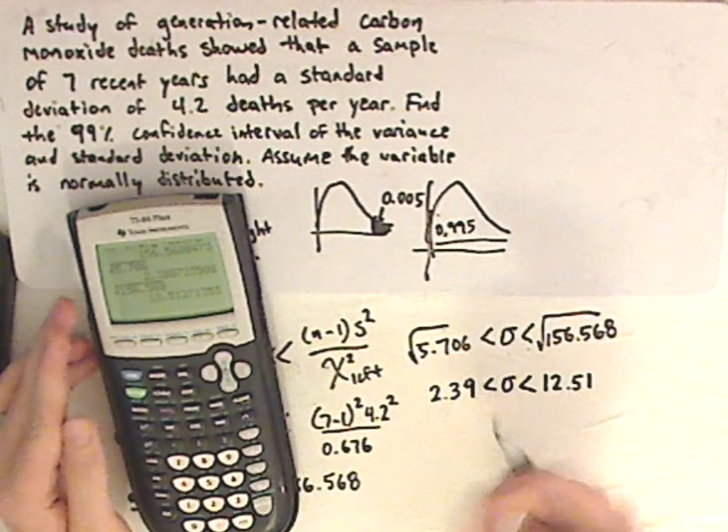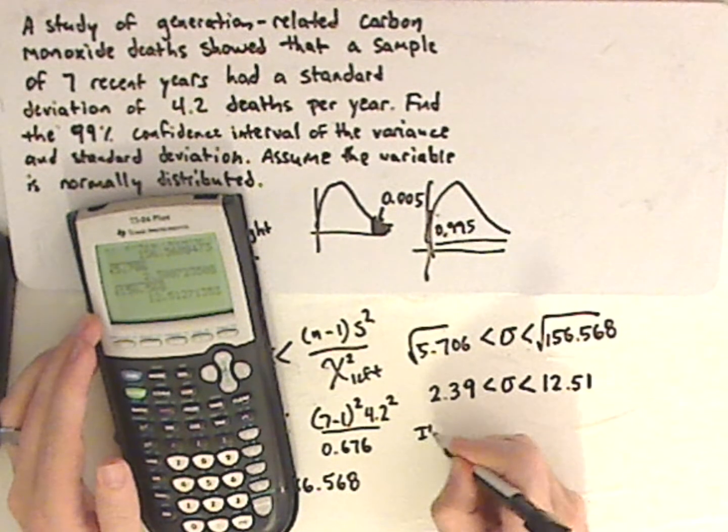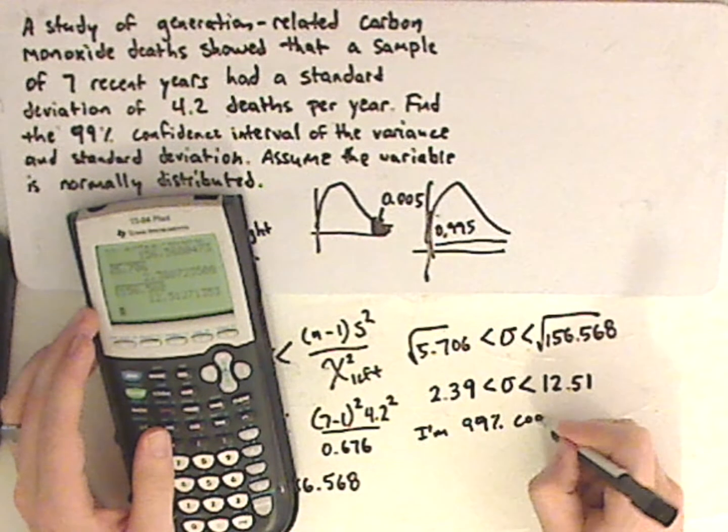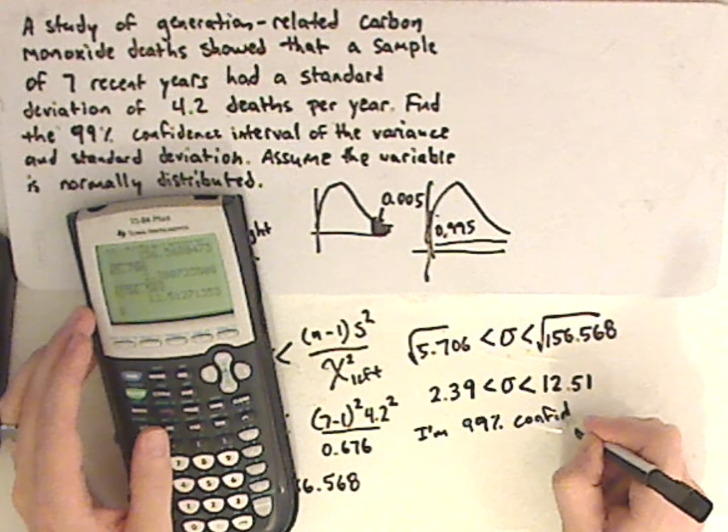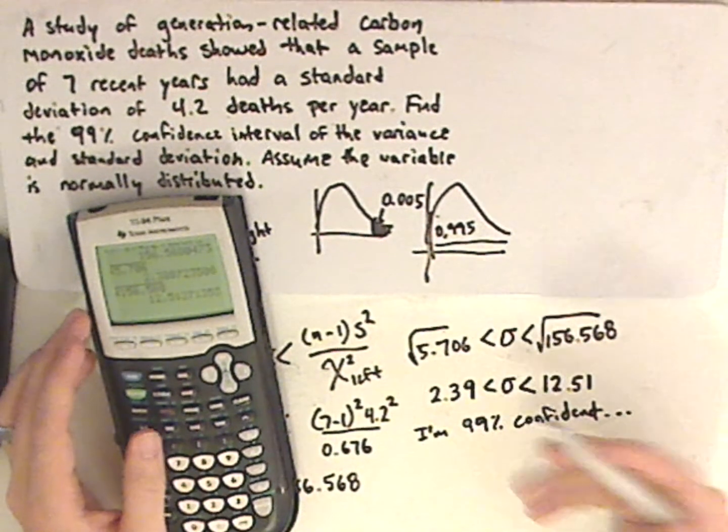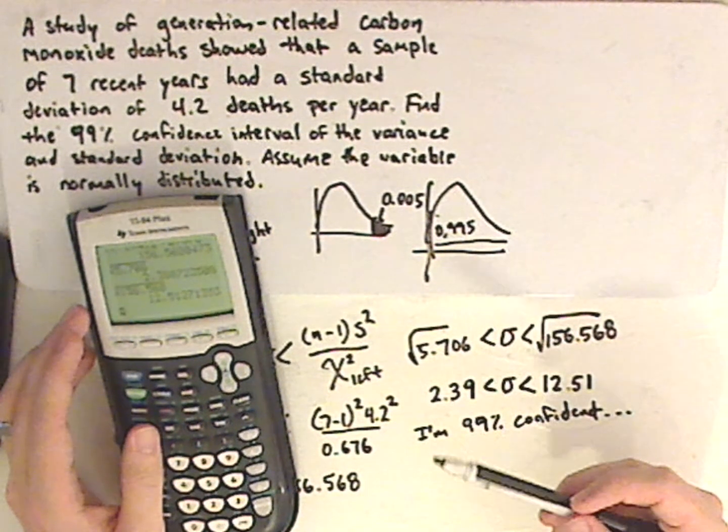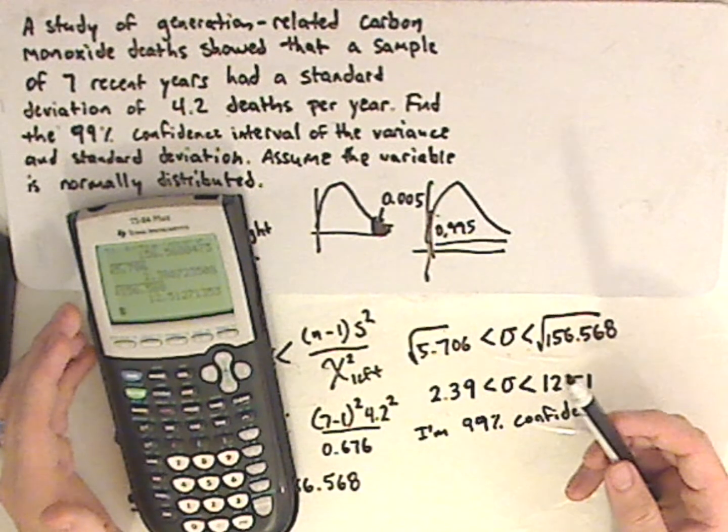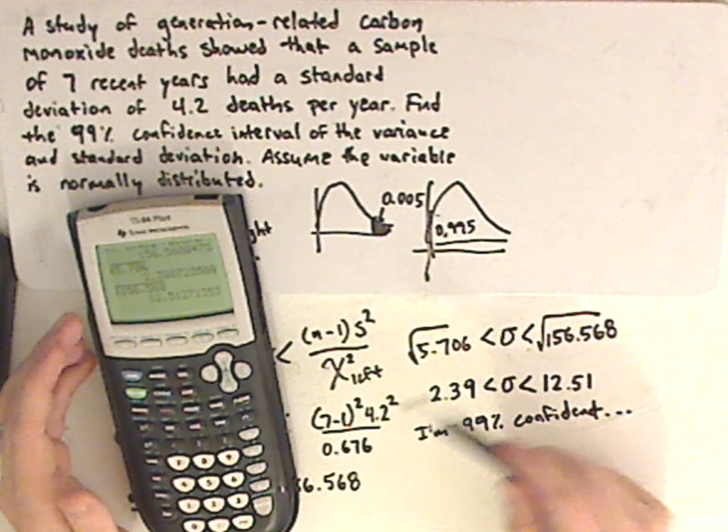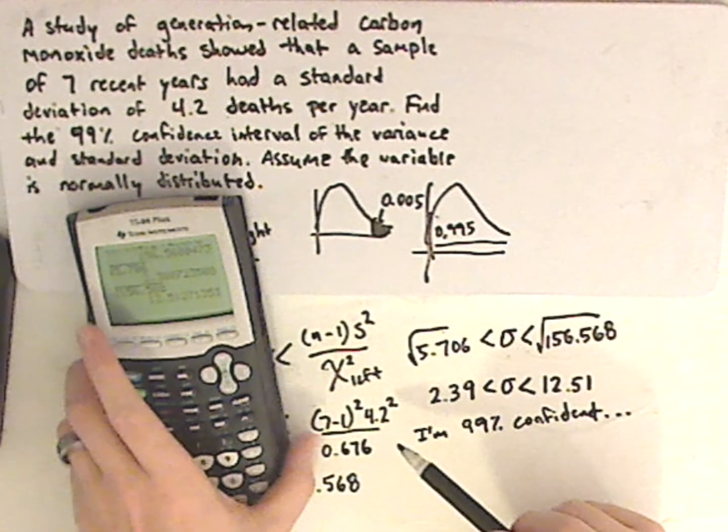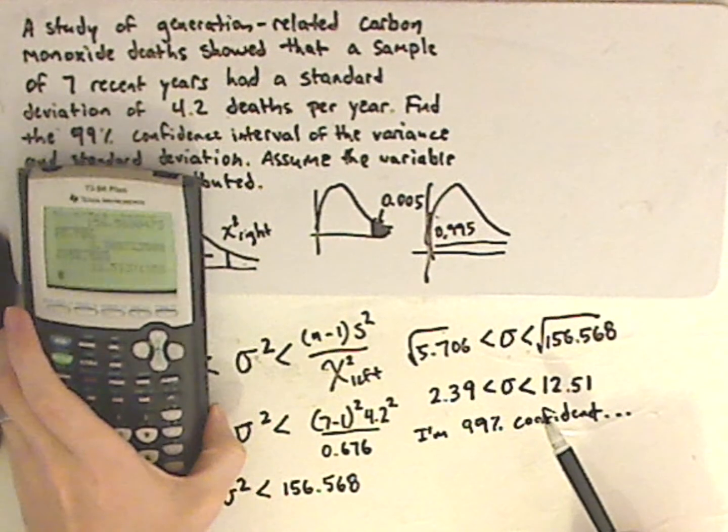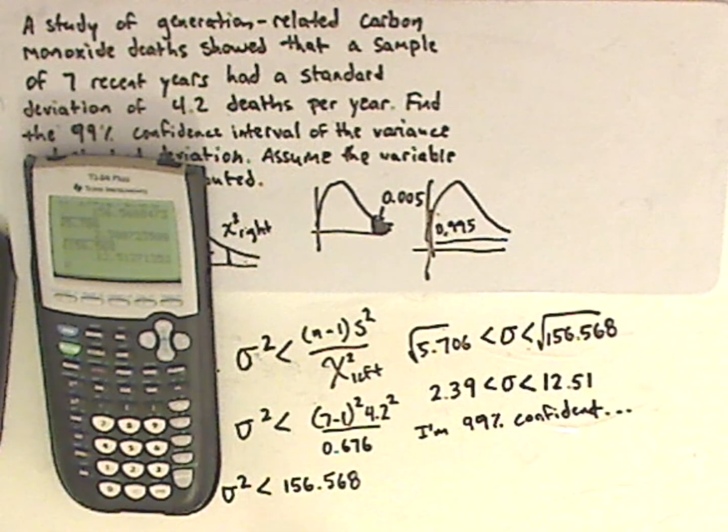And that's it. So, you basically say that I'm 99% confident that the variance or standard deviation of deaths per year is between such-and-such and such-and-such. And that's it.